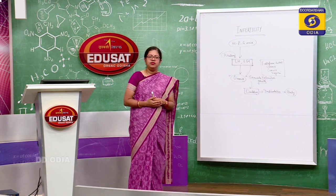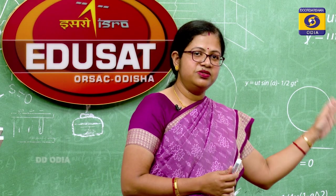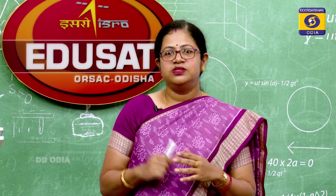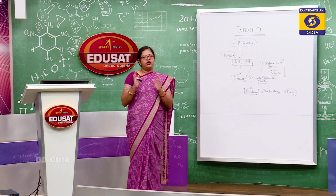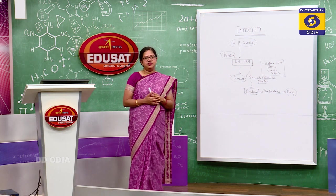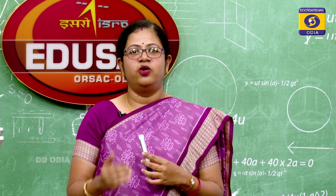Premature ovarian failure can be due to many reasons such as chemotherapy, exposure to various toxins, or immune disorders. PCOD and premature ovarian failure are very deleterious for a fertile condition. In ovarian factors, we also discuss the luteal phase. In the luteal phase, the corpus luteum secretes progesterone to maintain pregnancy, but if we have a disoriented or abnormal corpus luteum it will not sustain pregnancy. These are factors contributing to ovarian infertility.